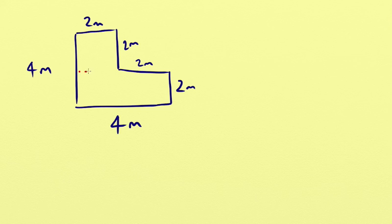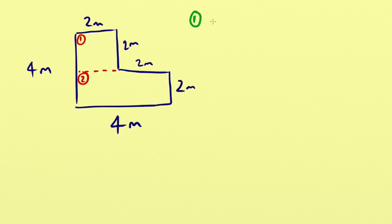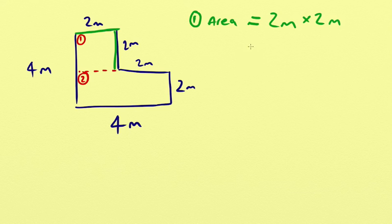Let's draw a line there. We've got shape 1 here — a little square — and a second shape, which is a rectangle. We know how to work out the area of a square or rectangle: multiply the length of one side by the length of another. So we're going to treat these two shapes individually. The area of shape 1 is 2 metres multiplied by 2 metres, which gives us 4 metres squared.